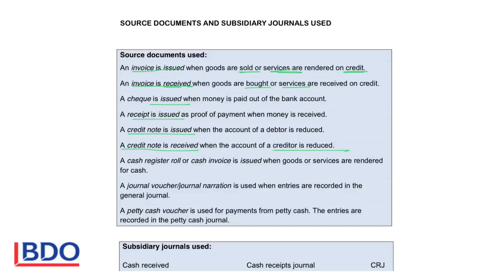A cash register roll or cash invoice is when services are rendered for cash or you sell goods for cash. You receive money immediately and will issue a till slip or a cash invoice to the customer.